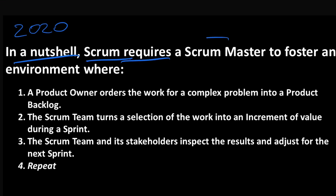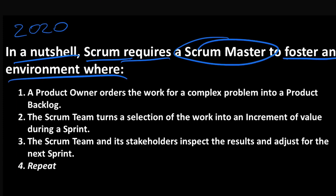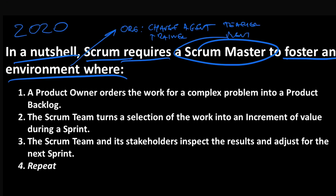Scrum requires a Scrum Master. And what does that Scrum Master do? They foster an environment where four things are basically possible. I want you to look at this word 'environment' — this means we're going to be working in the organization, as a change agent, a trainer, a teacher, maybe some mentorship, but a lot of stances working in the org. We're not just working with the Scrum team because we're trying to foster an environment where certain things are possible.